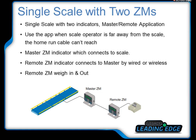The second type is a single scale with two ZAM indicators. One is called the master, which connects to the scale, and the other is called the remote, which connects to the master. The connection between the two indicators can be wired or wireless. This is used when the scale operator is far from the scale and the home run cable cannot reach the indicator. The master indicator supplies the weight to the remote, and the remote indicator handles weigh in and weigh out.